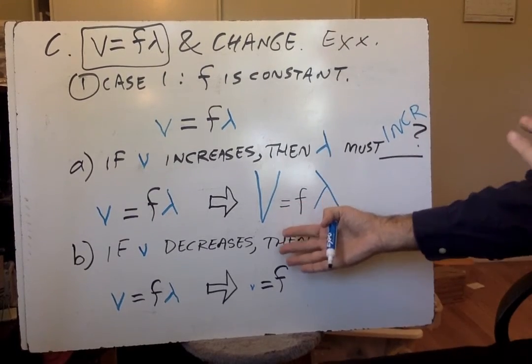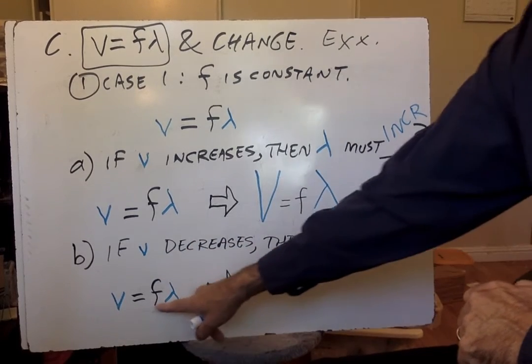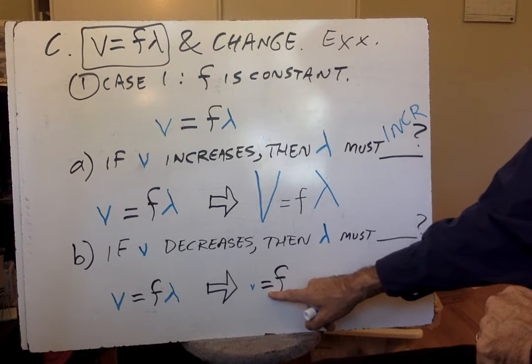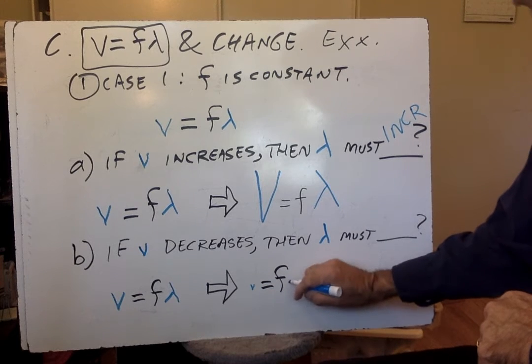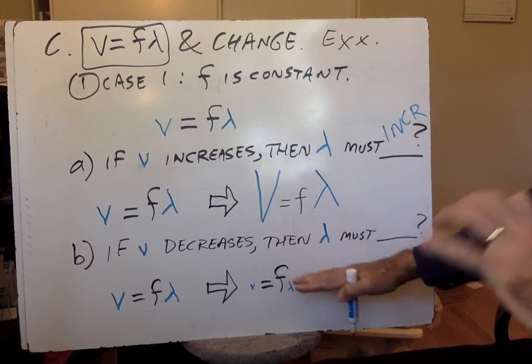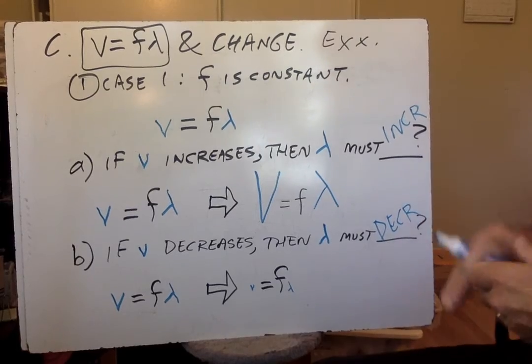And then the next part we go fast is just the reverse of that. What if the speed decreases, and the frequency is constant? That's like making the V a real tiny V. We have to keep things in balance. The only way it can stay in balance is if the wavelength also shrinks. Both sides got smaller. So wavelength must decrease.